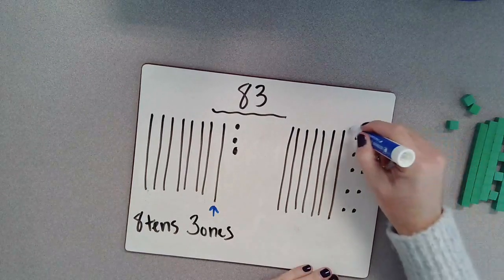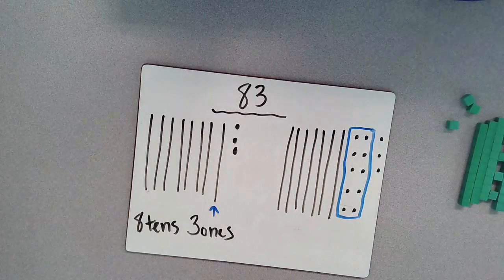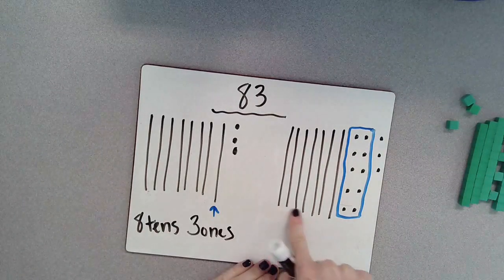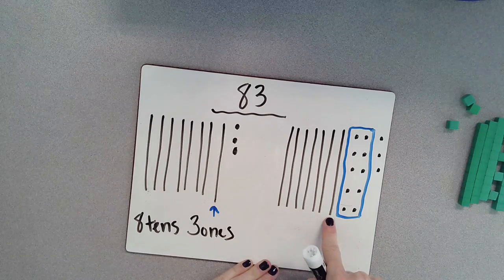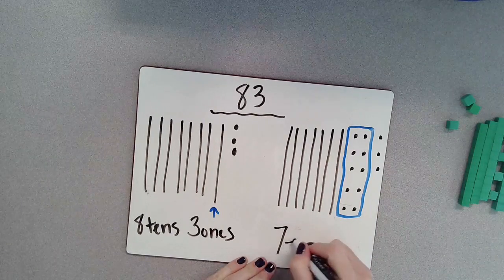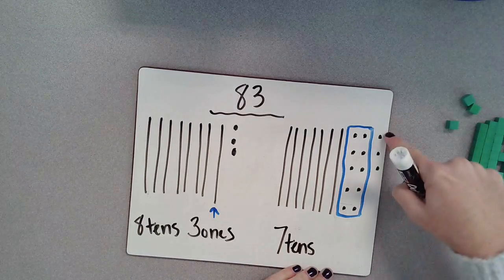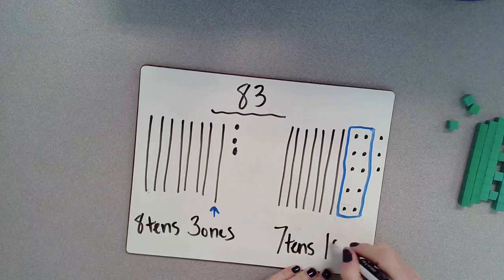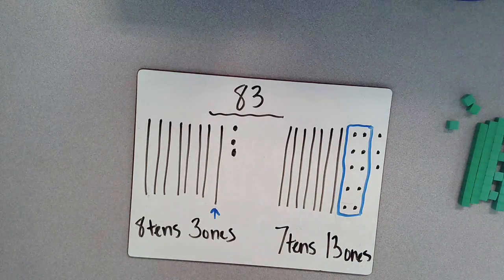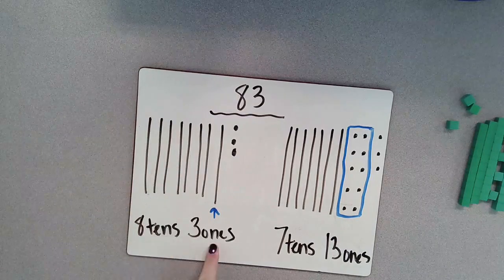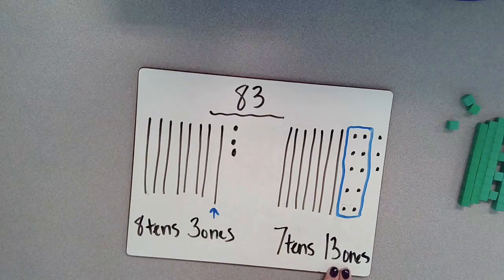So as we count it up, we'll make sure that we have it. So we know we have one, two, three, four, five, six, seven, or 70—we have seven tens or 70. And then we have another 10, 11, 12, 13. So we have 13 ones. So two ways that you could break apart 83 is eight tens and three ones, or you could take seven tens and 13 ones.